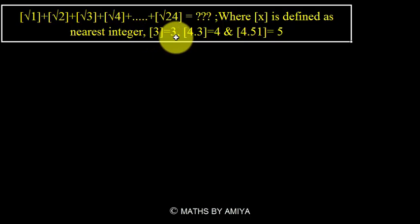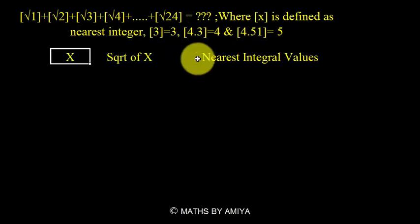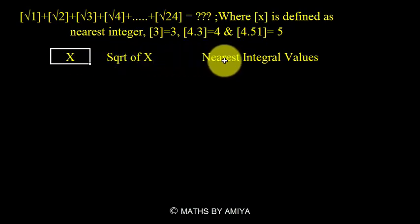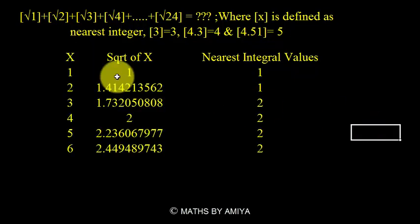I hope that is clear. There are two methods of solving this. The first method is to work on the square root of each integral value one by one, find the nearest integer, and add all of them together. I have created a chart for this. Analyze the chart and think — is this the best way possible or not?